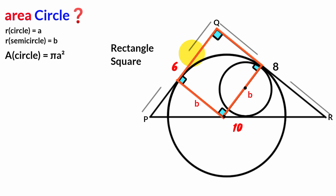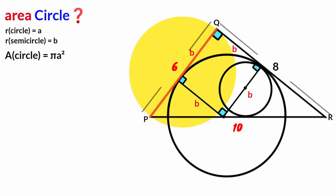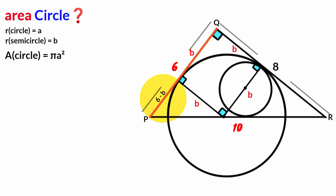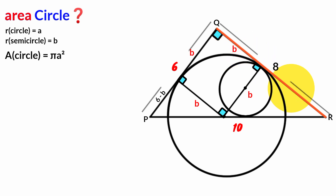All sides of a square are congruent. Since one side is P, the adjacent side must also be B. Looking at side PQ, it is 6 units in length and this portion is B, so the remaining part must be 6 − B. Similarly, side QR has length 8 units and this portion is B, so the remaining part is 8 − B.